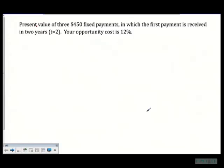So the way we're setting this up is we're going to set up our number of time periods. What we're looking at here is where exactly these payments are going to occur. So we have three $450 payments.